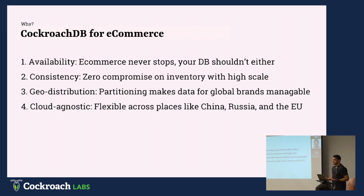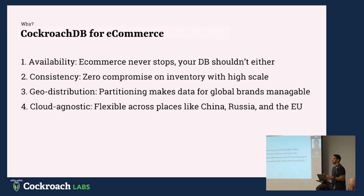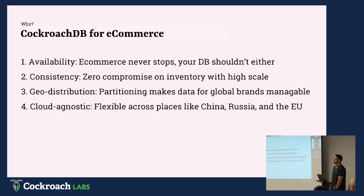Number two: consistency — zero compromise on inventory at high scale. Inventory for all of our retailers is super critical, so ensuring that it's always in sync and correct is key. Number three: geo distribution. CockroachDB's partitioning makes data for global brands extremely more manageable, because it removes the legwork of creating all these different rules versus what we can do at the table row level with Cockroach. And number four: being cloud agnostic — super flexible across places like China, Russia, and the EU where we can't just use one cloud provider and may have to use two or three.